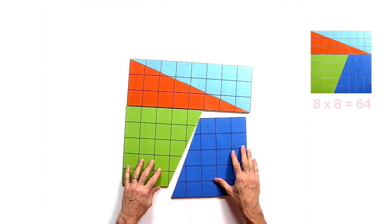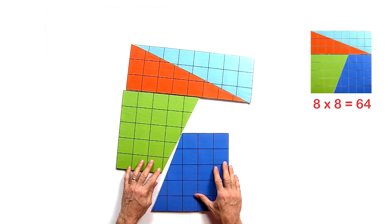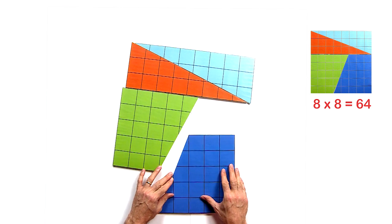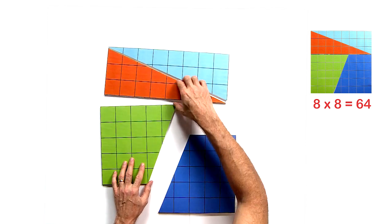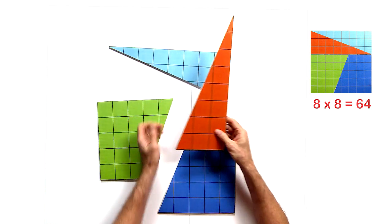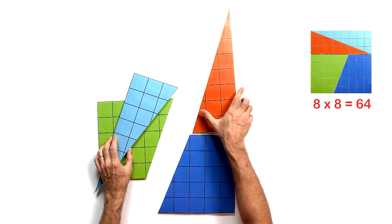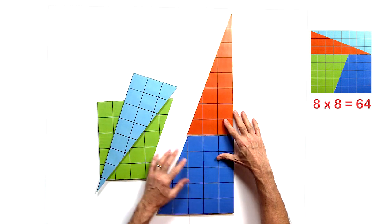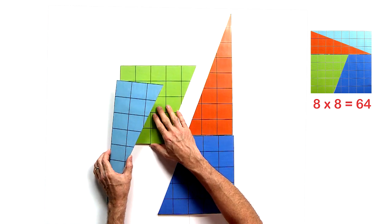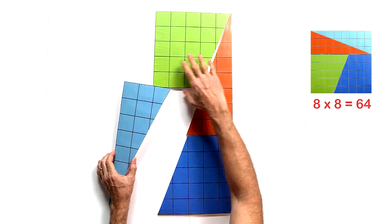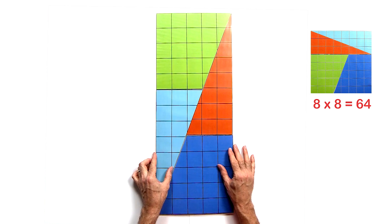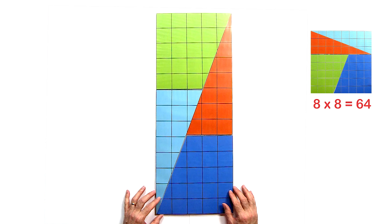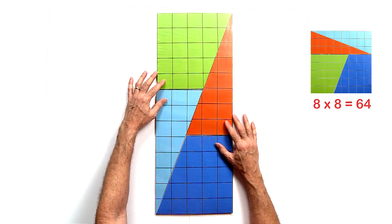I can take this square and rearrange the pieces. Put the trapezoid on the bottom, put a triangle on the top, and then another trapezoid, and then a triangle. So I've converted this square into a nice rectangle.